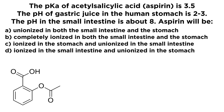First things first, let's look at the structure of aspirin — acetylsalicylic acid. That would be this here. We know that the pKa of this molecule is 3.5, and that specifically corresponds to this carboxyl proton here in this carboxylic acid functional group.